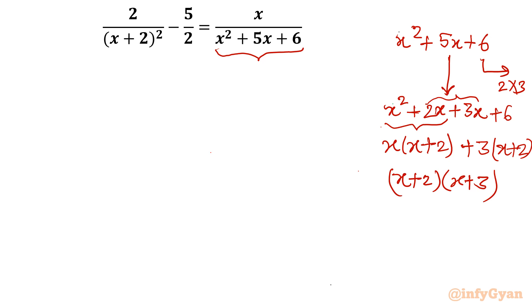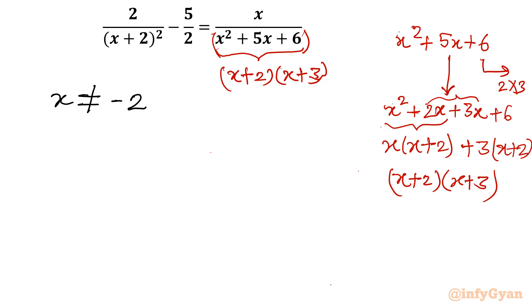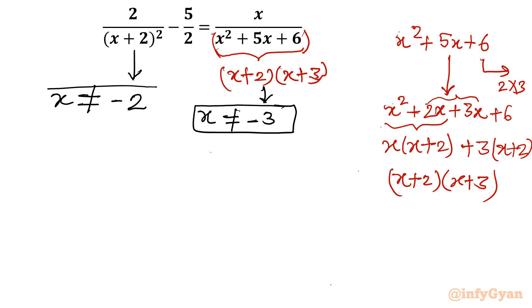Now I will replace this denominator by (x+2)(x+3). Let's talk about the domain, because we can see our denominators. From the first bracket, x cannot equal negative 2, and from this denominator, x cannot equal negative 3. So except these values, every real value is accepted.